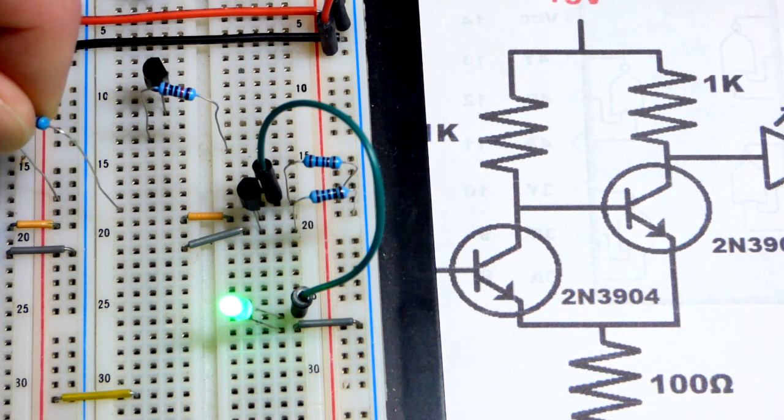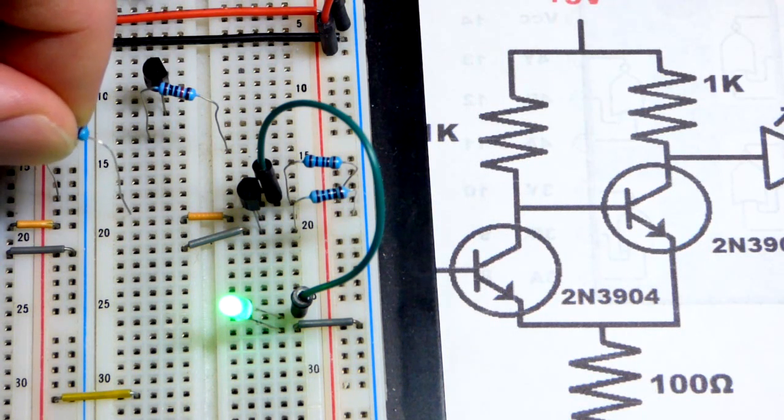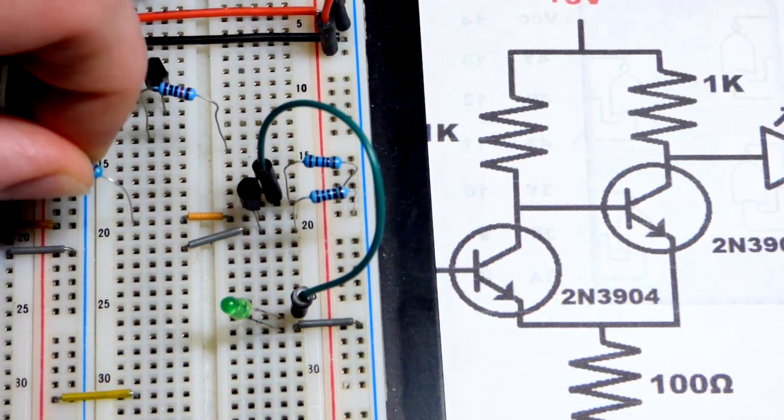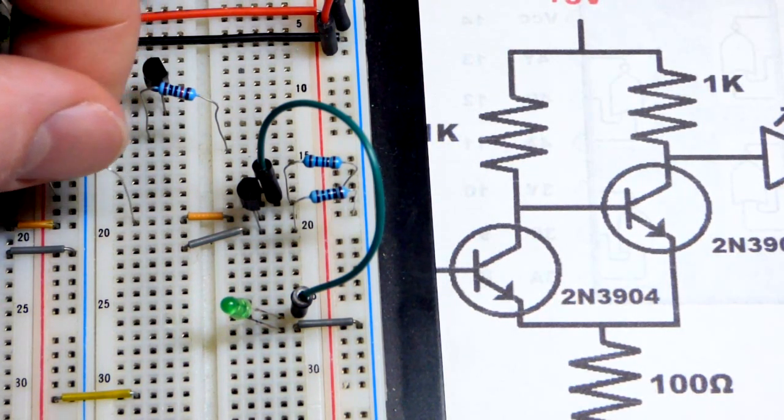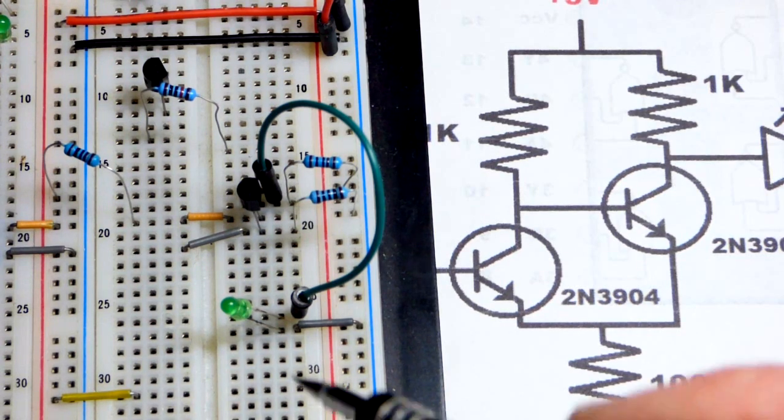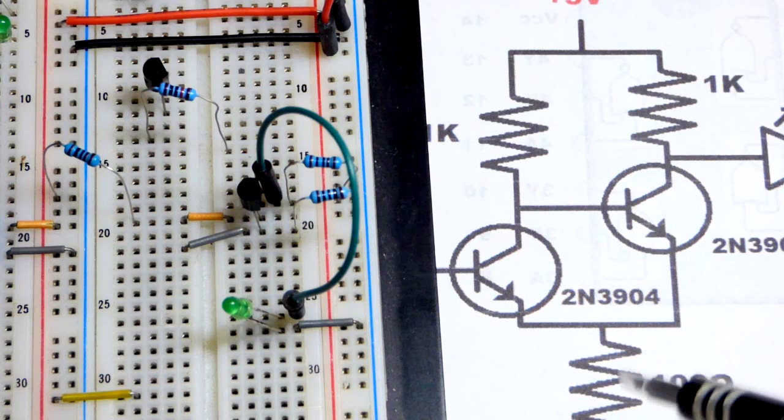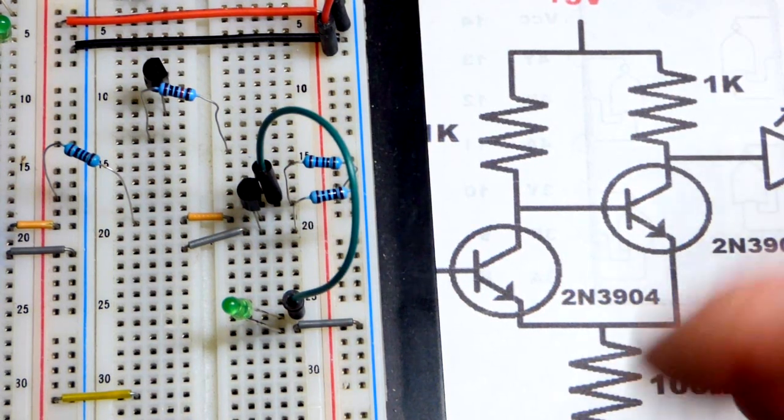We can look at that right now. We'll take this one kilo ohm resistor put it to the positive rail, so now the transistor is on and the LED is off because that's conducting. It conducts easier through the transistor and that resistor than the LED right there.